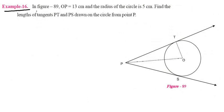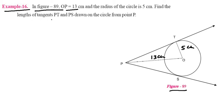Example 6: In figure 89, it is given that OP is 13 centimeters, as you can see here. And the radius of the circle is 5 centimeters. Find the length of the tangent PT.